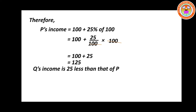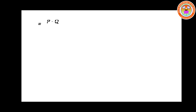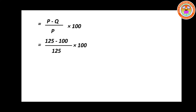Now Q's income is 25 less than P's. In percentage terms: Q's income is less than P's with respect to P's income equals (P minus Q) divided by P into 100. P value is 125 and Q value is 100. So: (125 minus 100) divided by 125 into 100 equals 25 divided by 125 into 100. Cancel 125 and 100 in the 25 table — 25 fives are 125 and 25 fours are 100. Then cancel 5 and 25 giving 5 into 4, which is 20%. So 20% is your final answer.